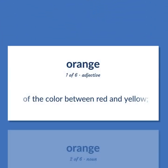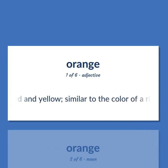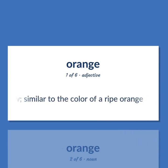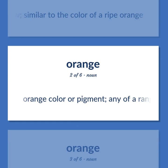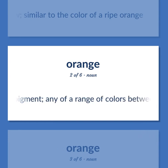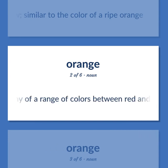Of the color between red and yellow, similar to the color of a ripe orange. Orange color or pigment, any of a range of colors between red and yellow.